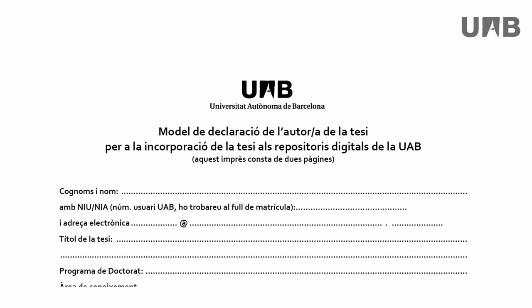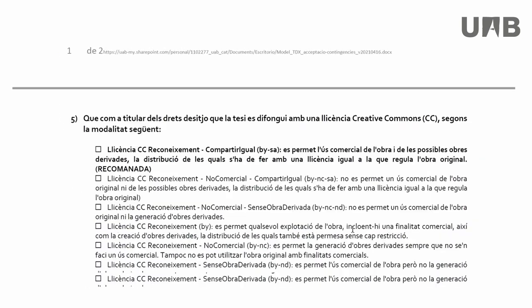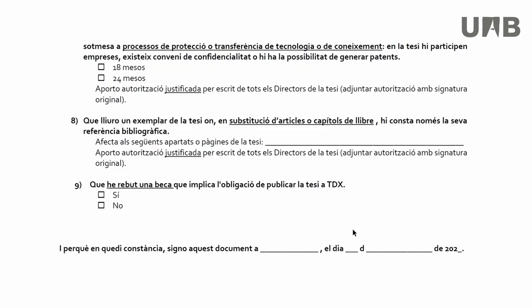In the preparation of your thesis by compendium, if a publisher does not let you include any version of your articles in the thesis — neither the submitted, the accepted, nor the published version — you must indicate it to deposit your thesis. On TDX and Tessio, there is a specific section to explain that published articles or book chapters associated with your thesis by compendium cannot be included because the publisher does not allow it.